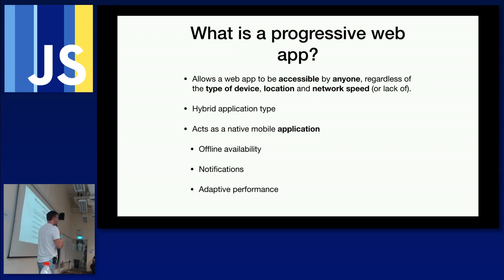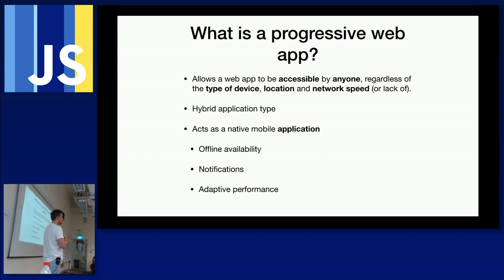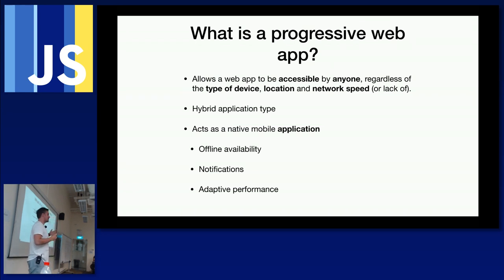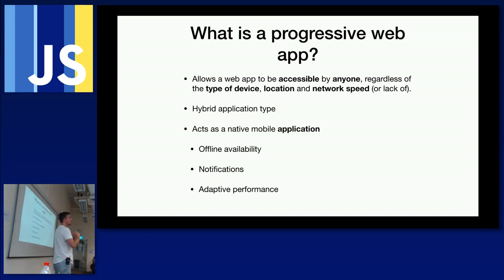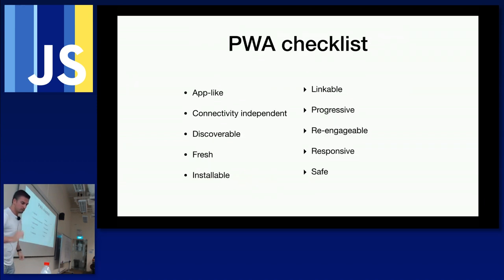A Progressive Web Application allows a web app or website to be accessible by anyone regardless of what device they use and where they are in the world — meaning what speed of network they use or what their location is. The term 'progressive' means you give users a progressive enhancement: if someone is on a 2G network you don't want to stream an HD video, whereas on Wi-Fi you do.